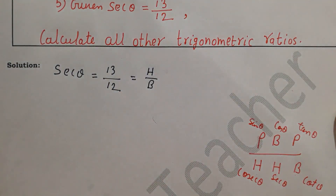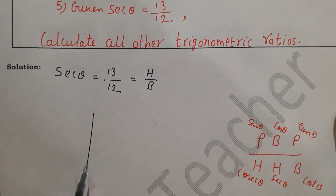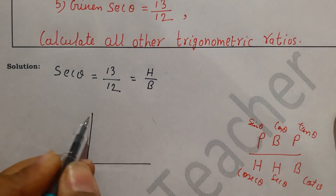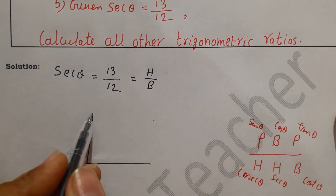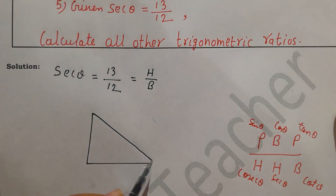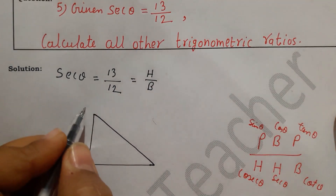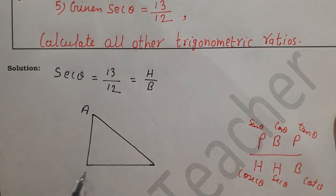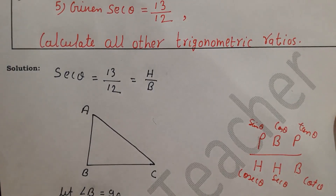I will draw a triangle here, because in this question we need to complete the triangle with perpendicular, base, and hypotenuse. We know base and hypotenuse, but perpendicular we don't know — we need to calculate that. Let triangle be named ABC, and let angle B be 90 degrees.